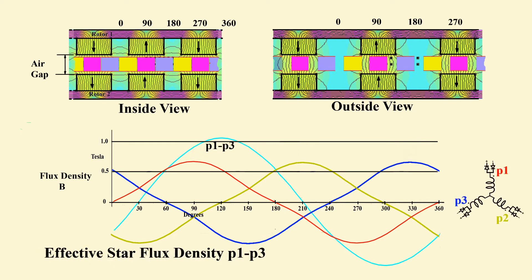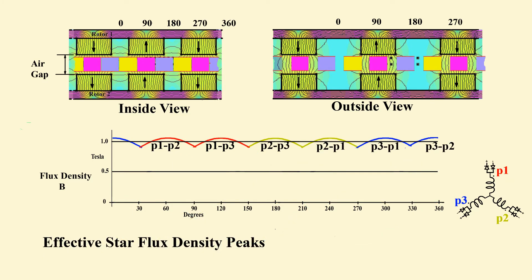Effective values for star connection are given by subtraction of phases. For example, phase 1 minus phase 3 is shown here. The result is a near perfect sine wave due to total elimination of third harmonic content. Taking the highest absolute value of the subtractions gives a waveform proportional to the machine's loaded, rectified voltage.